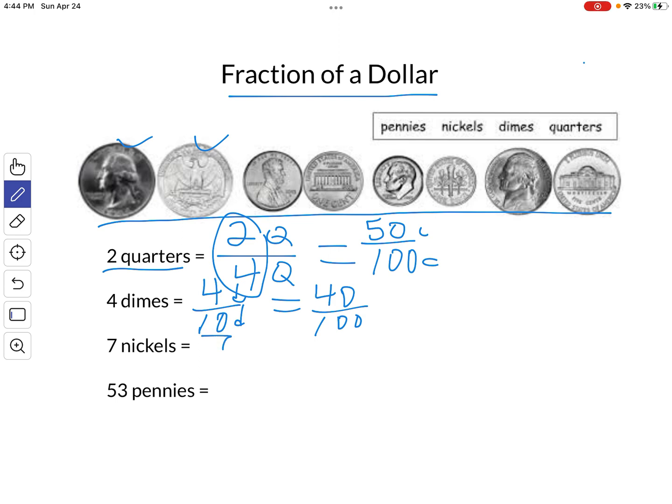Seven nickels. That's seven out of how many nickels it takes to make a dollar? Twenty nickels in a dollar. So seven nickels is seven twentieths of a dollar. Or seven nickels is thirty-five cents out of a hundred cents that it takes to make the dollar.